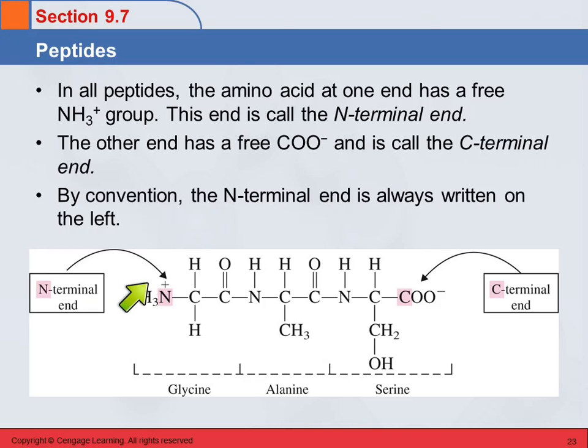This picture is showing three different amino acids in a peptide. So this would be a tripeptide. This is glycine, alanine, and serine. And here the R groups for glycine is just a hydrogen, for alanine it's a methyl group, and for serine is this small alcohol group.